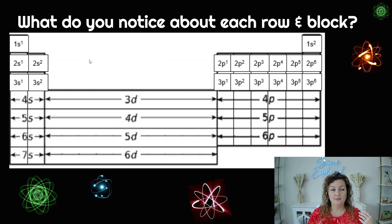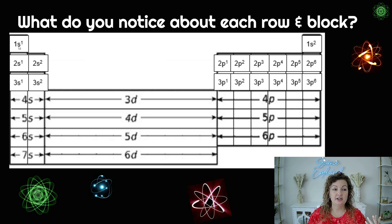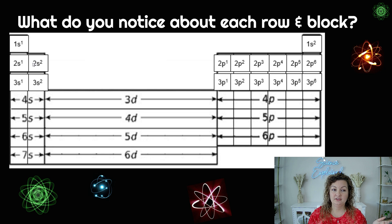So now, to write our electron configuration, we need to do it as if we're reading a book. We're gonna start at the top and go left to right, just like you're reading, and down a line every time, just as if you're reading a book. So if I am going to start here, this is 1s1, then we go to 1s2. Next line down: 2s1 — so this is the second row, the S block, and this is one electron.